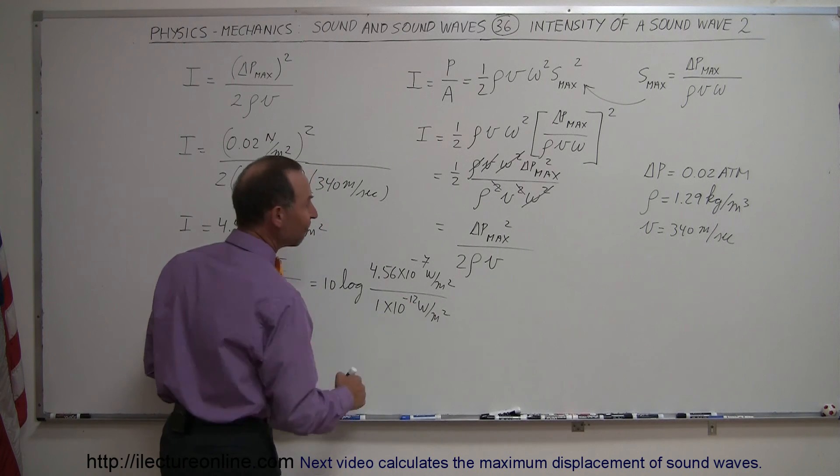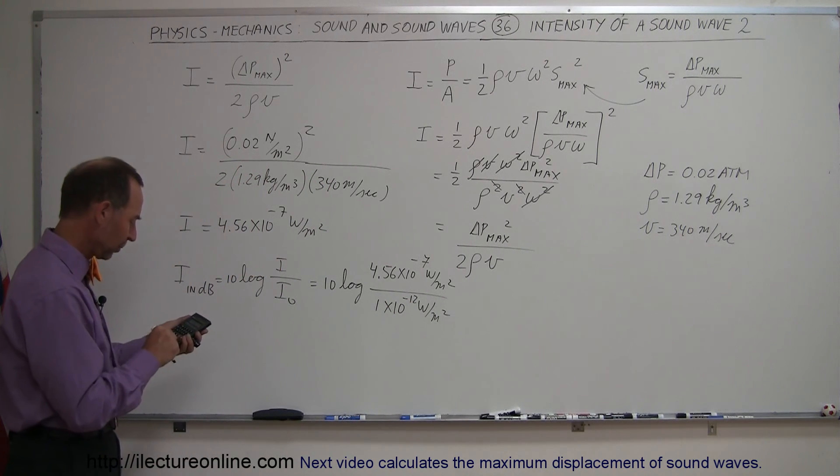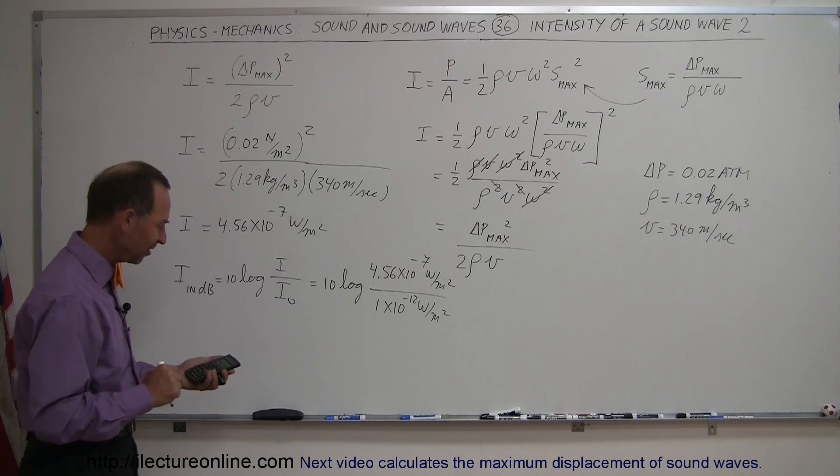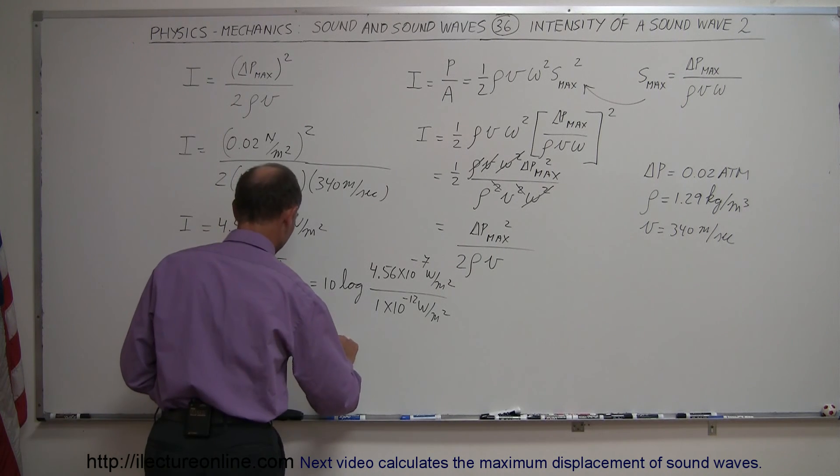Remember this is the faintest sound that human hearing can hear, so we divide by 1e to the minus 12, take the log of that, and then multiply it times 10, and we get 56.6 decibels.